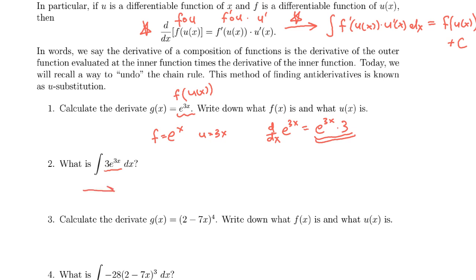So immediately, without any thought, we can say, oh, there was a composition here. We had e to the 3x as our composition, and so the antiderivative of 3e to the 3x is just e to the 3x, like this. Again, plus c.